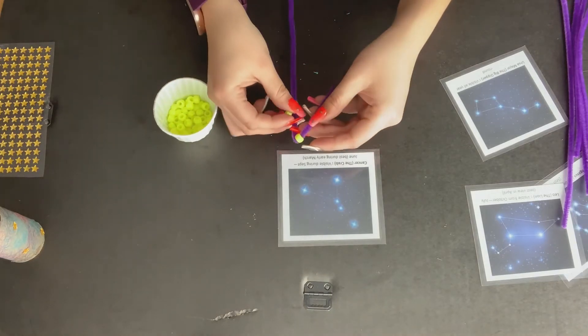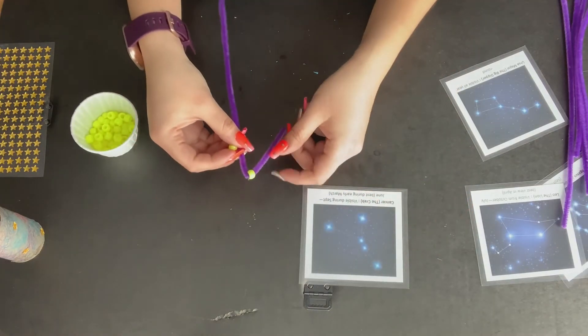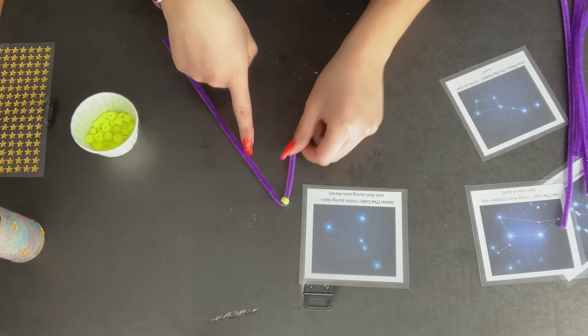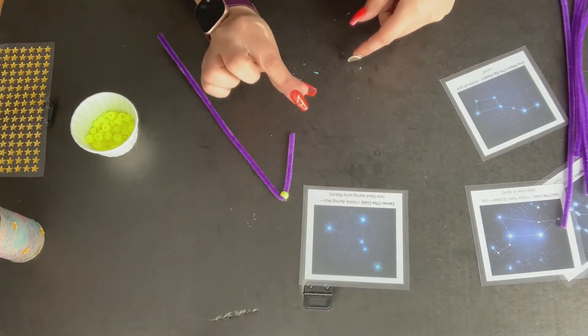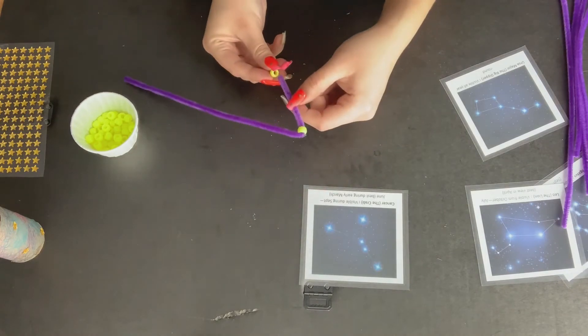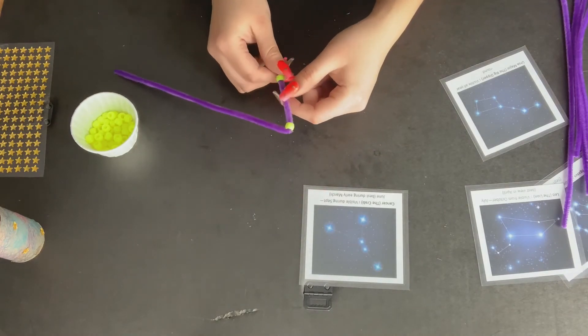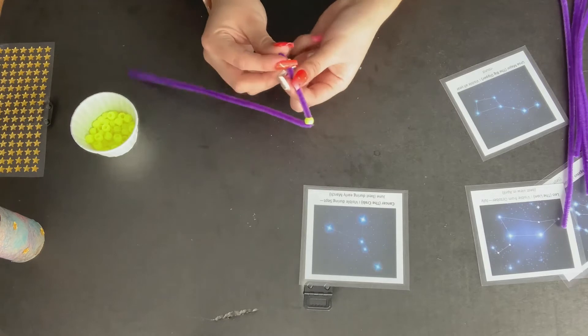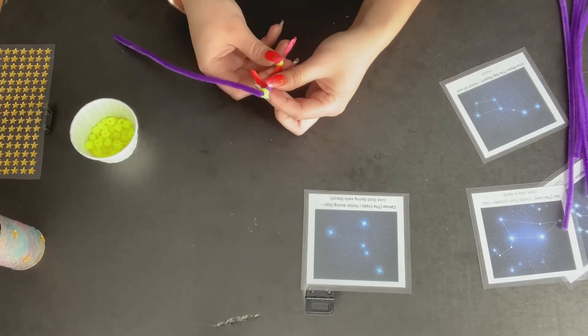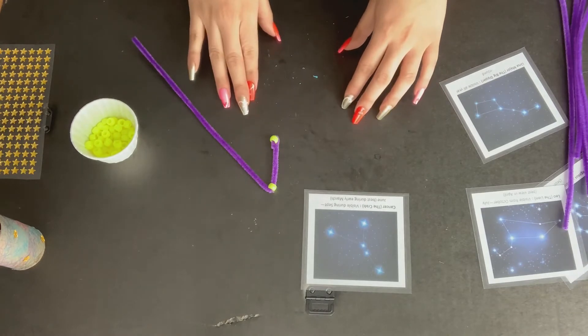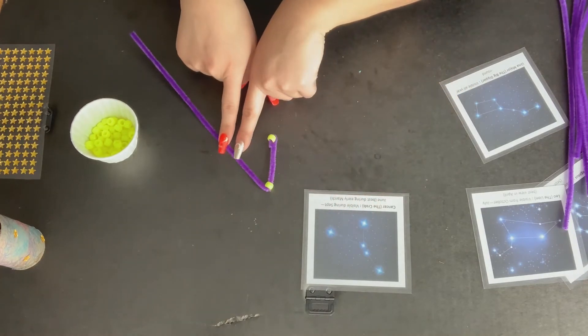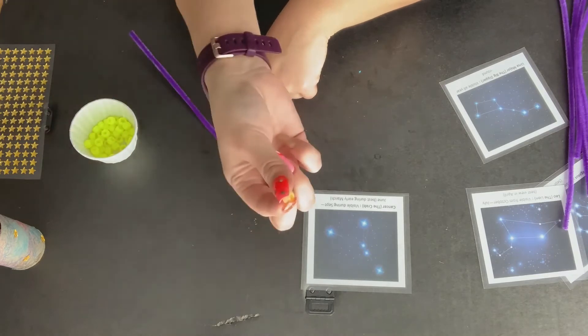And this is how I have started my Cancer constellation. I bent it on one end and added the bead. I'm going to add my second bead that is going to replicate the bottom star there. And I have one more star over here.